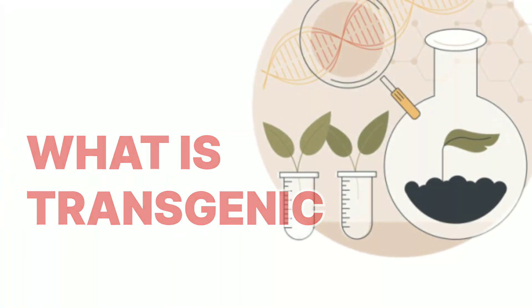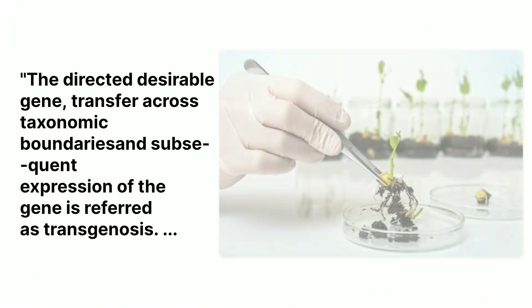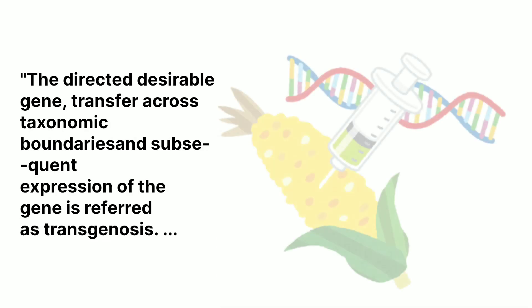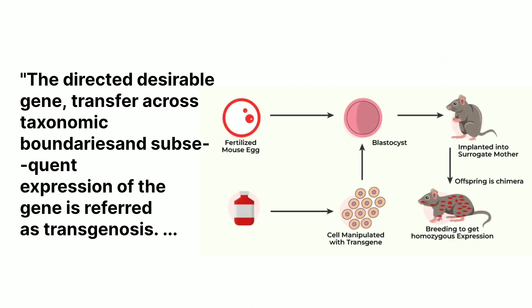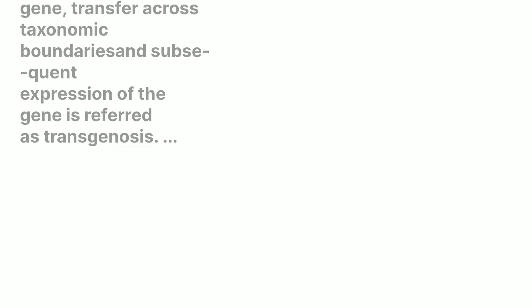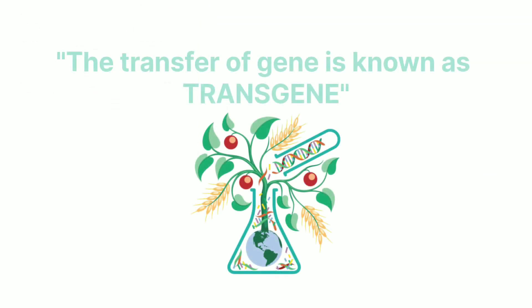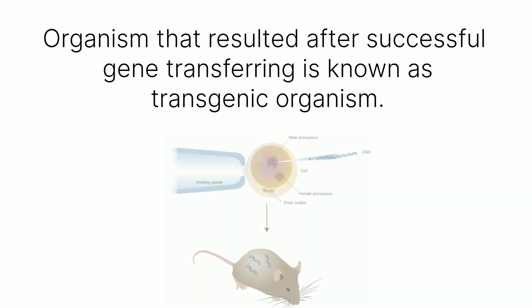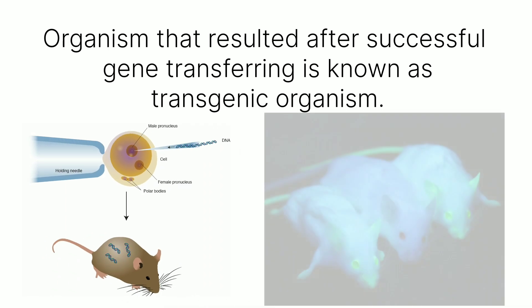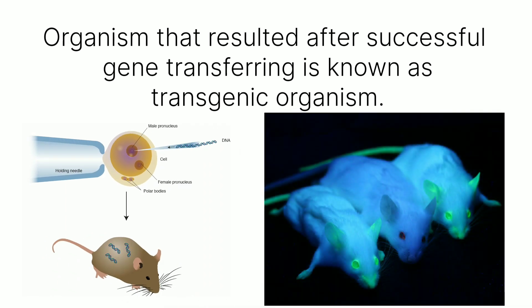What is transgenic? The directed desirable gene transfer across taxonomic boundaries and subsequent expression of the gene is referred to as transgenesis. The transferred gene is known as a transgene, and the organism that results after successful gene transfer is known as a transgenic organism.